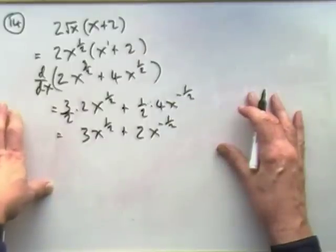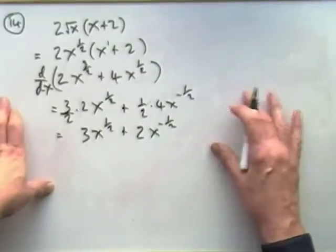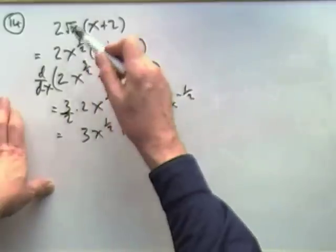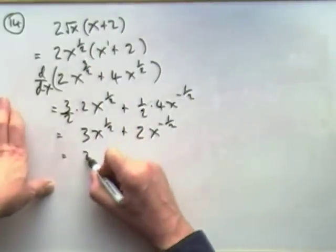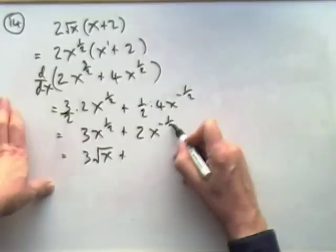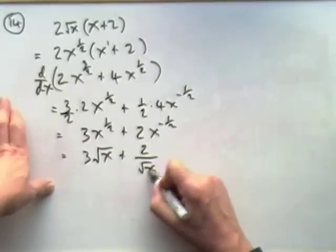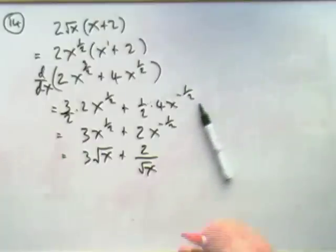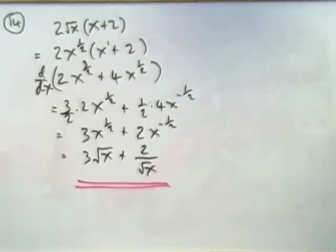I prefer to put things back the way I found them. There were no indices originally, so rewrite: x to the half is root x, giving 3 root x, and x to the negative half is 1 over root x, giving 2 over root x. Someone has to maintain standards — that's that question.